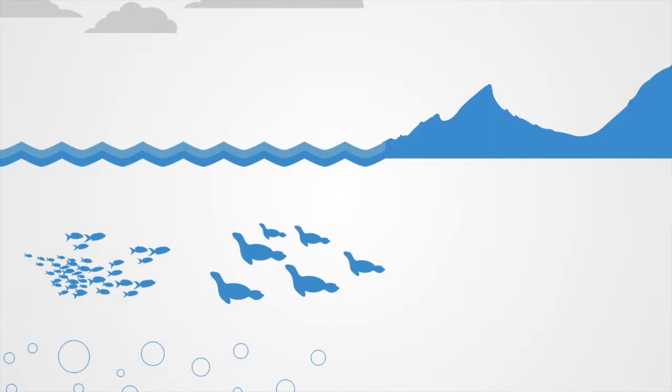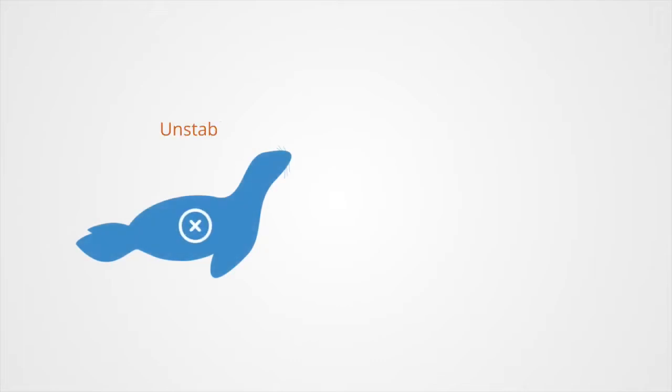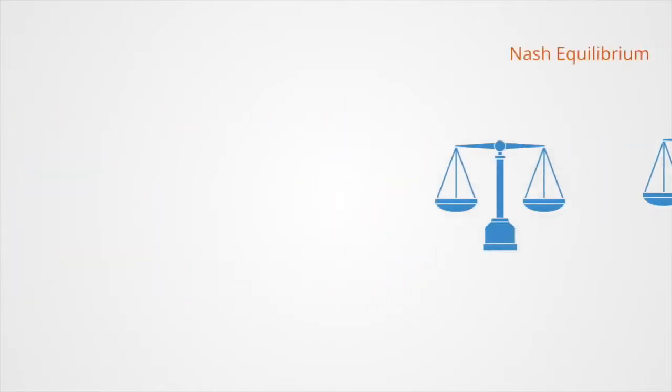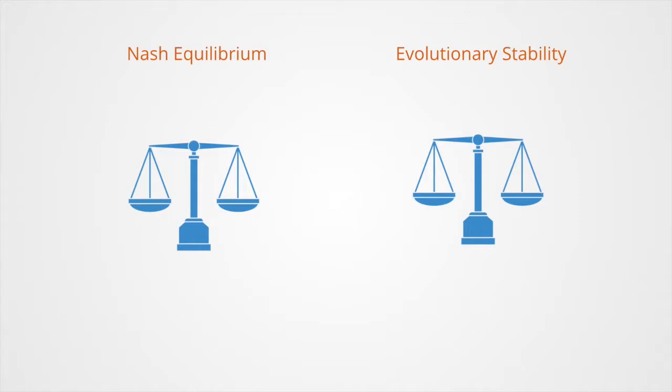Thus the defector strategy can be said to be evolutionarily unstable, and likewise the fishing strategy may also be unstable. What may be stable in this evolutionary game is some combination of both.